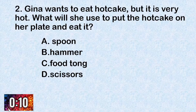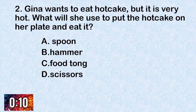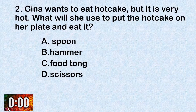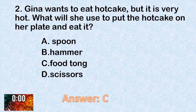Number two: Gina wants to eat something hot, but it is very hot. What will she use to put the hot cake on her plate and eat it? A. Spoon. B. Hammer. C. Food tongs. D. Scissors. The correct answer is C, food tongs.